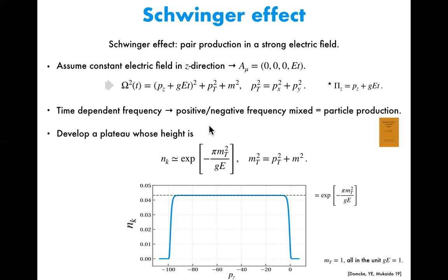In our specific case, we can solve the Dirac equation and see how the spectrum looks like. I will first show the numerical results and explain the features of the spectrum, and then explain how we can understand that more intuitively. Here the horizontal axis is P_z and the vertical axis is the occupation number. In this specific case, the spectrum looks like this — as you can see, there exists a plateau.